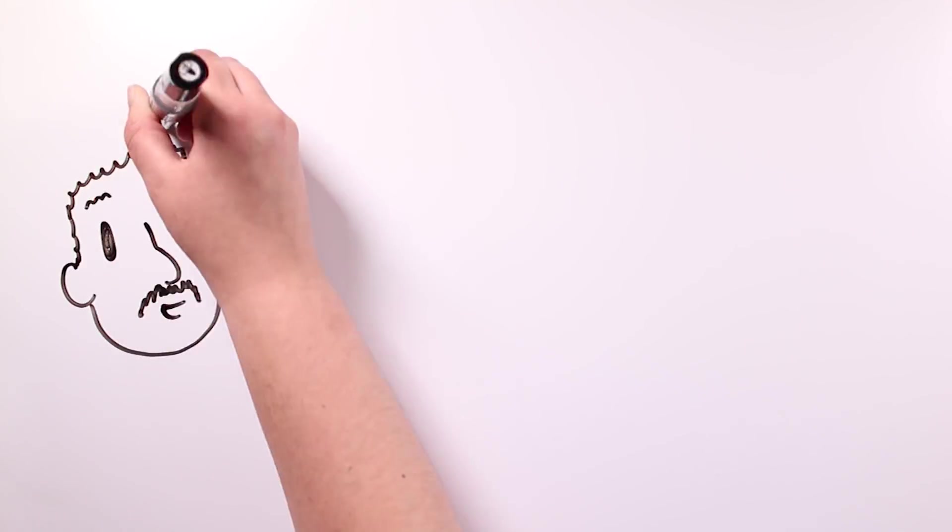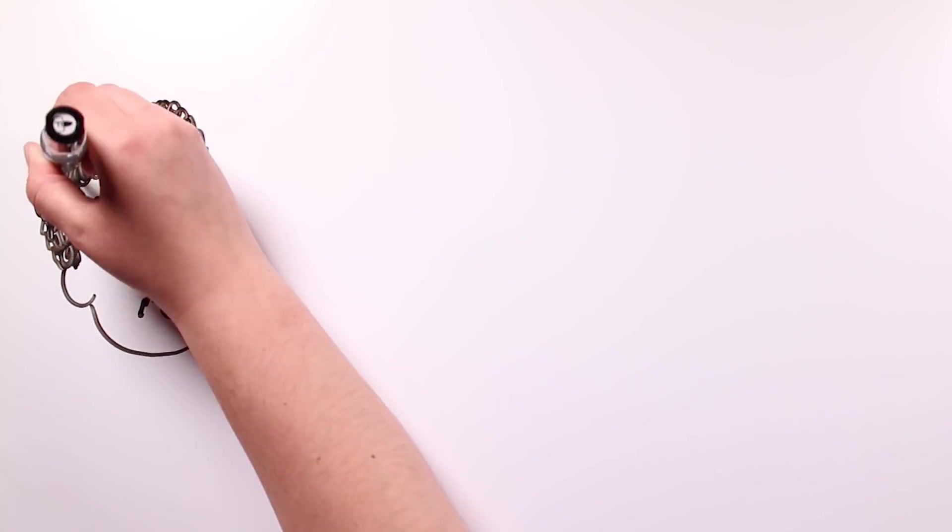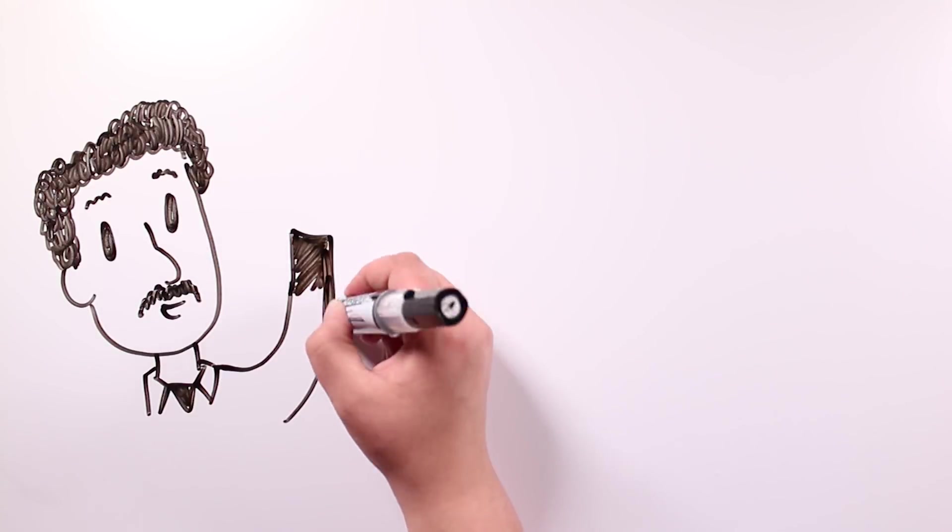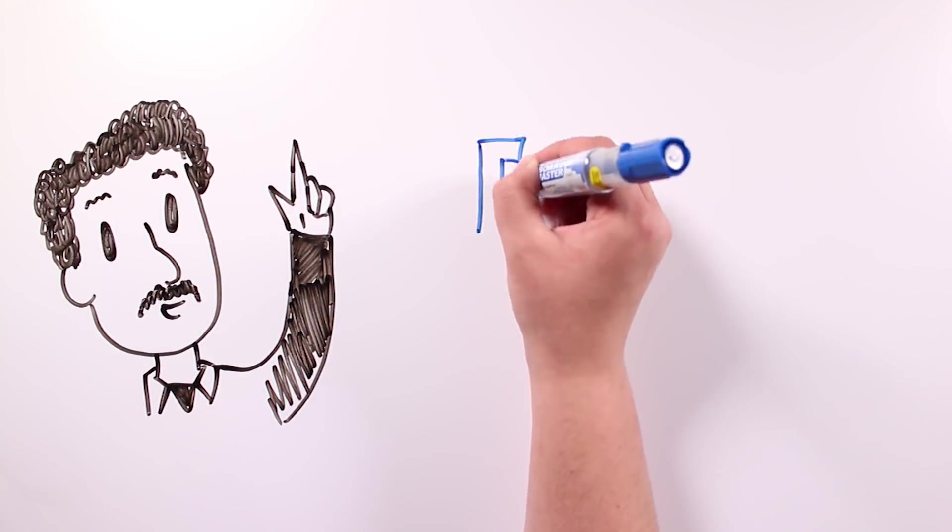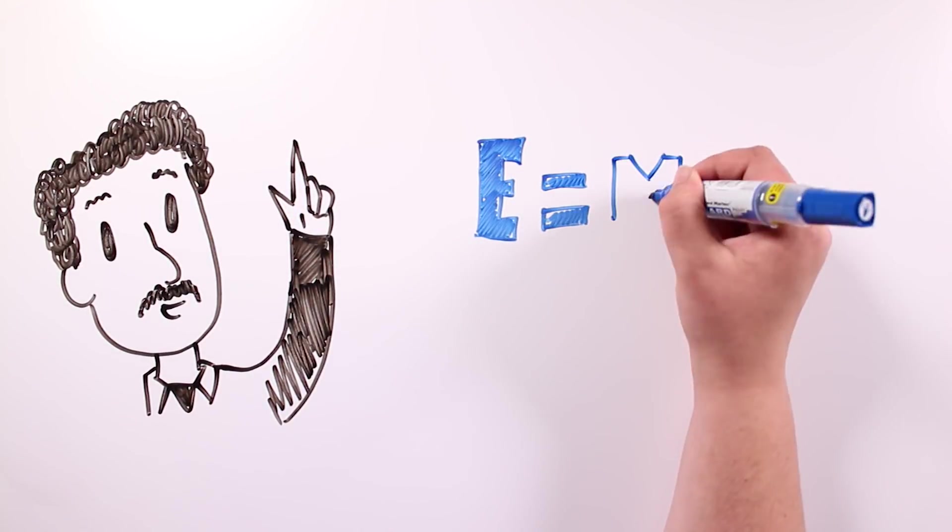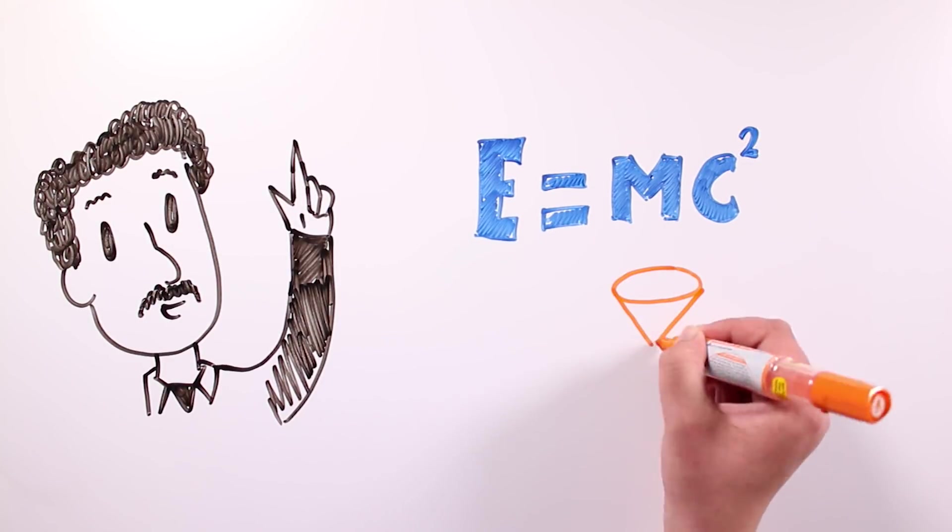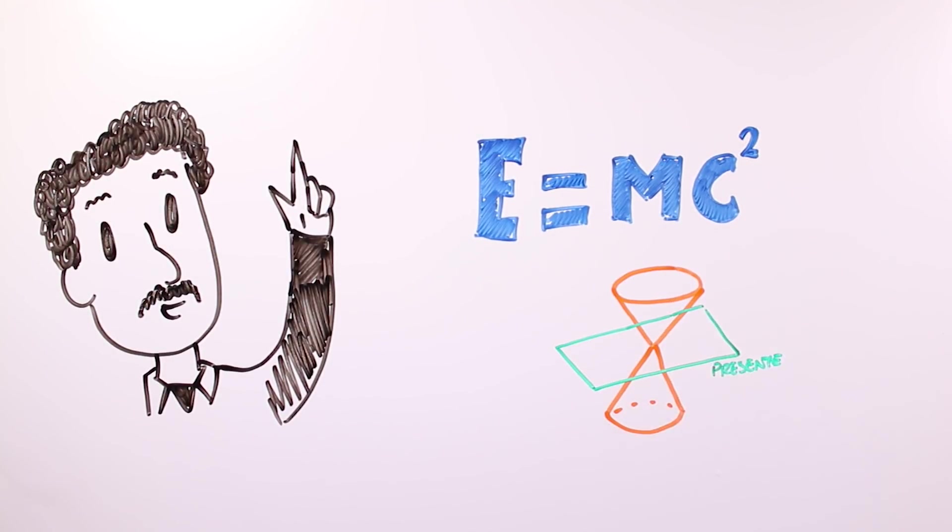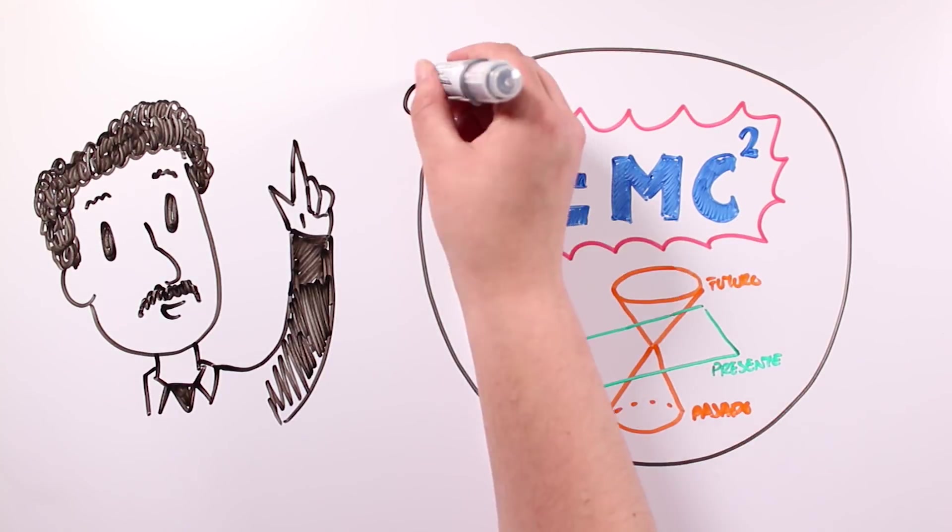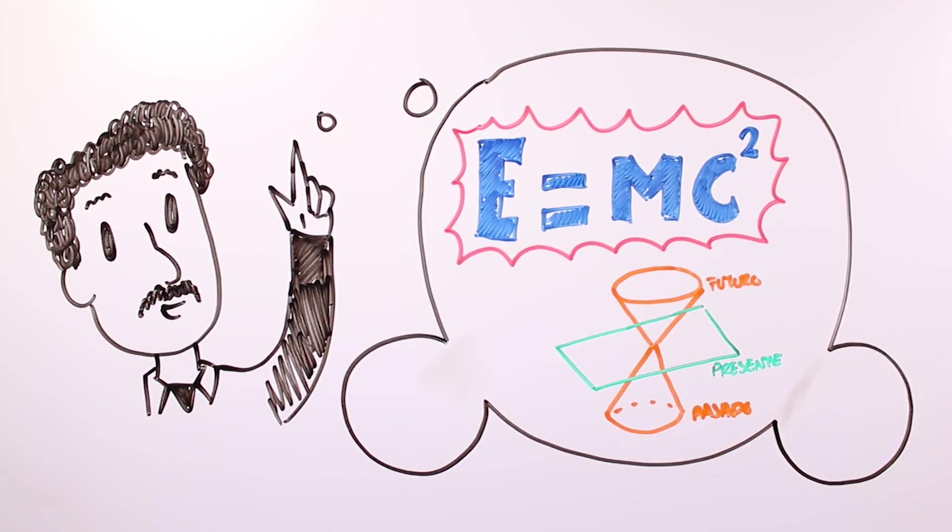In 1905, while Albert was still an unknown physician, he published his first special theory of relativity. And as a deduction from this one, we have the most popularly known physics equation, E equals mc squared, the equation of mass-energy equivalence.